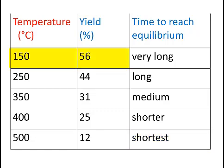So, on one hand, we want the low temperature for the high yield. On the other hand, we want a high temperature for the time to reach equilibrium to be short. And so, what on earth do we do?